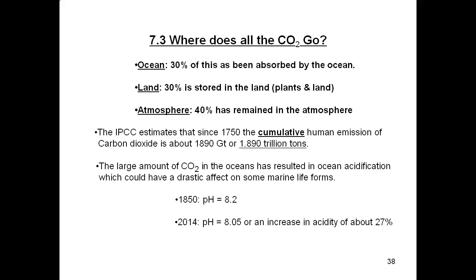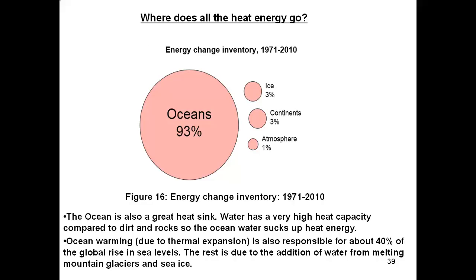Where does all that CO2 go? Well, 30% is absorbed by the ocean, 30% is stored in the land, and 40% remains in the atmosphere. The IPCC estimates that since 1750, cumulative human emissions of carbon dioxide are about 1,890 gigatons, or almost 2 trillion tons. A large amount of CO2 in the oceans has resulted in ocean acidification, which could have a dramatic effect on some marine life forms. Where does all the heat energy go? In Figure 16, we can see that 93% of the heat energy gained by the planet has gone into the oceans. The other 7% has been absorbed by the land surfaces, the atmosphere, and into the melting of ice.